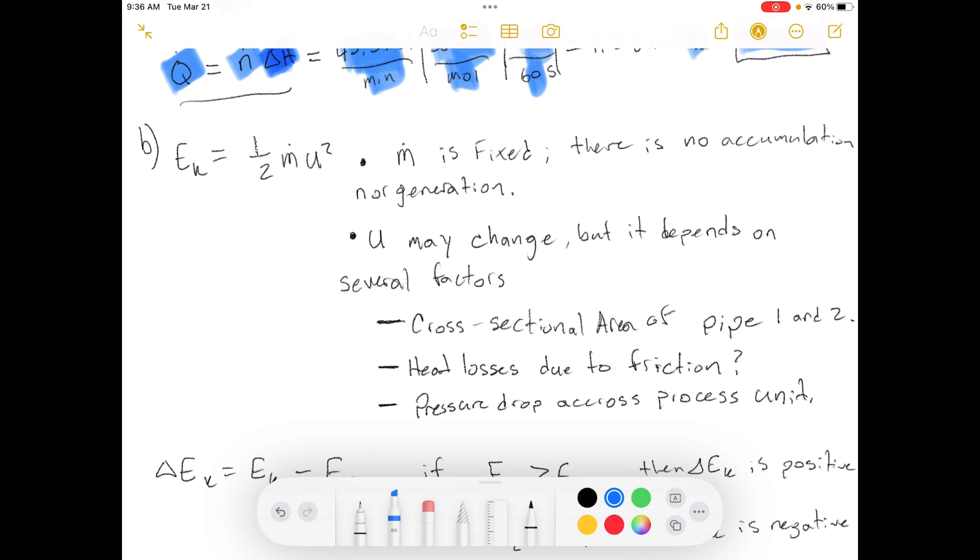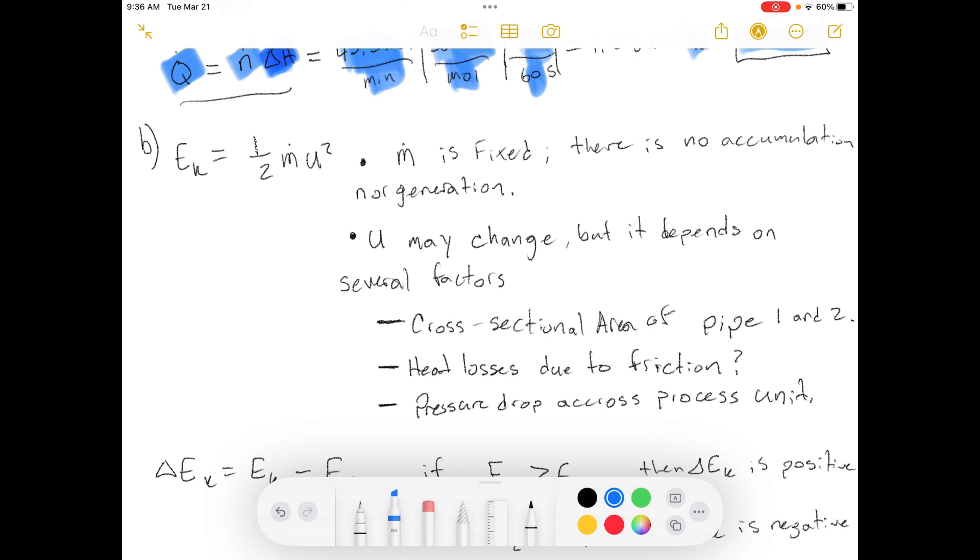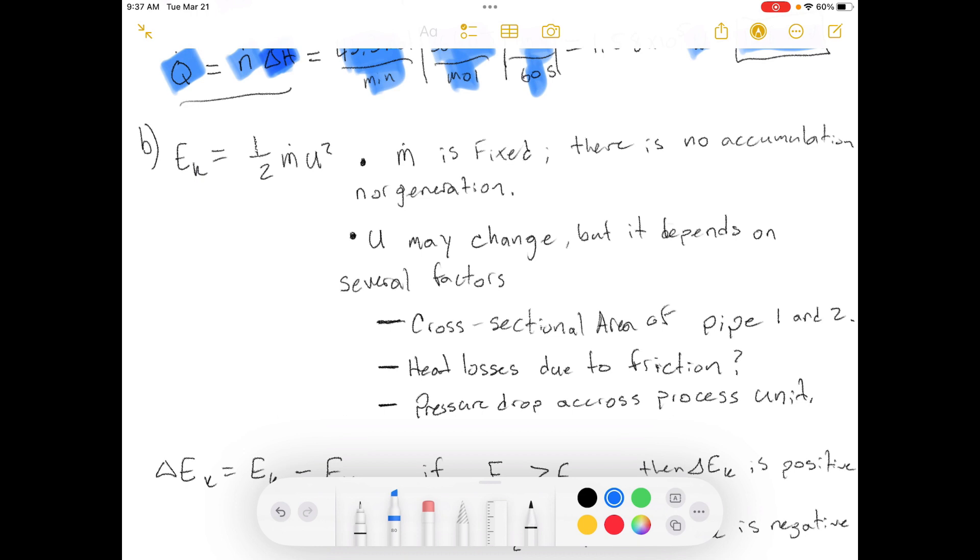Now for part B. Part B says, would the value of the change in kinetic energy, which was neglected in part A, be positive or negative? Or would you need more information to be able to tell? If the latter, what additional information would be needed?